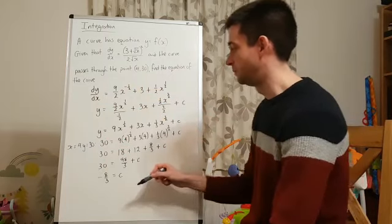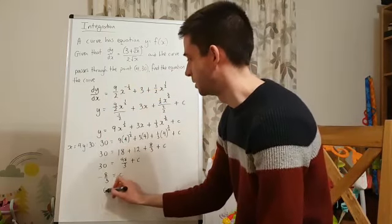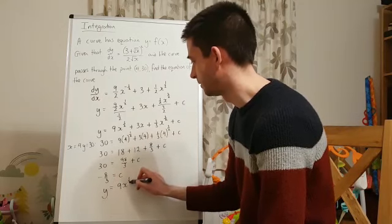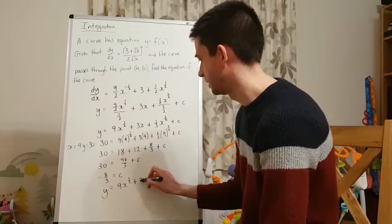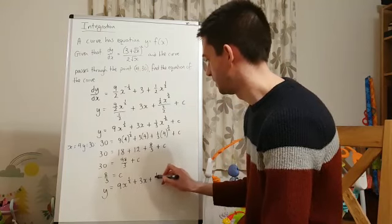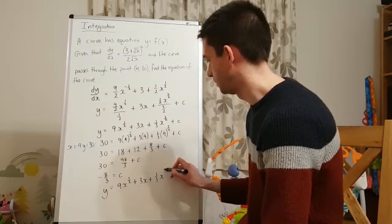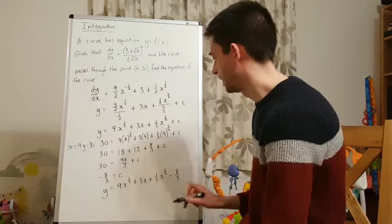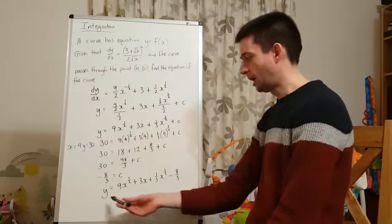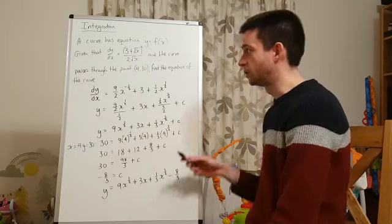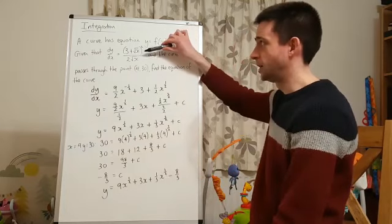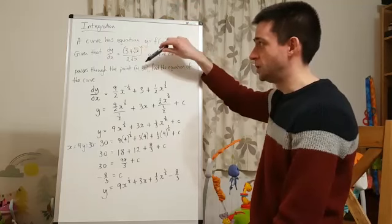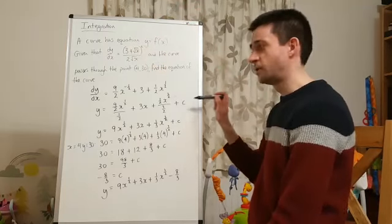So, all I'm going to do, just to finish the question, is I'm going to write that the equation of my curve is y equals 9x to the power of a half plus 3x plus 1 third x to the power of 3 over 2 minus 8 over 3. And that is the equation of the original curve, which I found by integrating my gradient function, dy dx, and then substituting in the point that I was given to find the value of c.